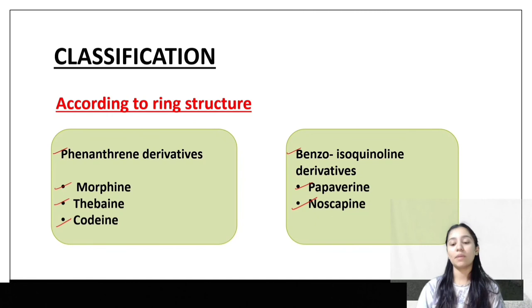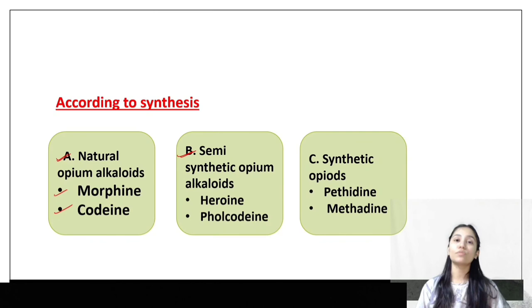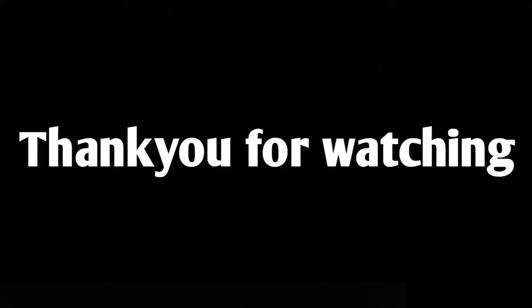According to synthesis, we have three categories. First, natural opium alkaloids which we get naturally without synthesis — these are morphine and codeine. Second, semi-synthetic opioids, where natural elements are modified — these include heroin, noscapine, and pholcodine. Third, synthetic opioids, which are fully synthesized — the most common example is methadone. So these are the classifications of morphine.